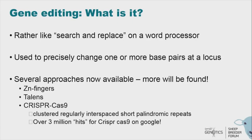Gene editing is very different from classical GMO methods. It's much more like a search and replace on a word processor — you take a particular sequence of those 100 million base pairs, search for it, and replace one or more elements very precisely. The first widely available approach was zinc fingers, then TALENS, and most recently CRISPR-Cas9 — which stands for Clustered Regularly Interspaced Short Palindromic Repeats. Cas9 is one particular enzyme used in CRISPR, and there are others. A Google search for CRISPR-Cas9 returns over 3 million hits, so there is an enormous amount of work being done on this system.